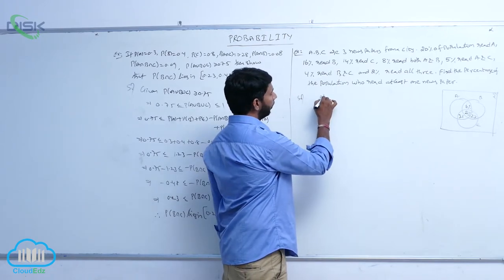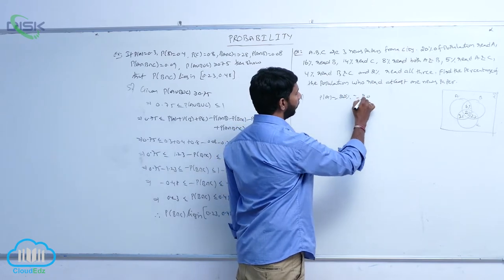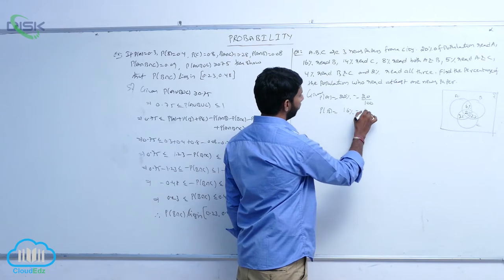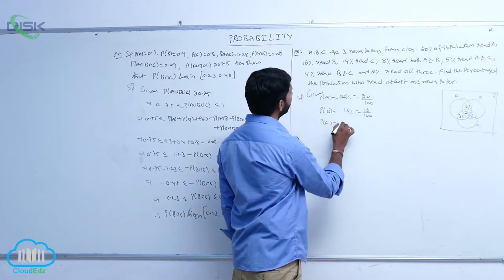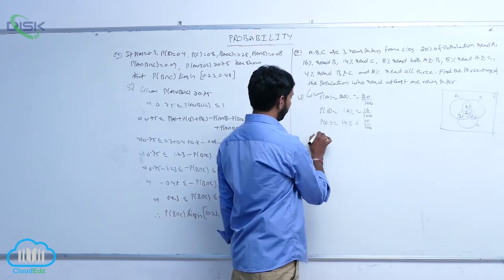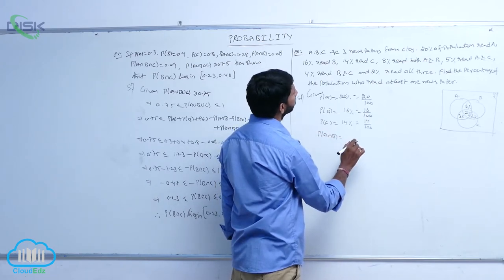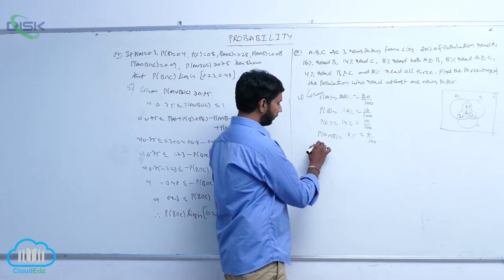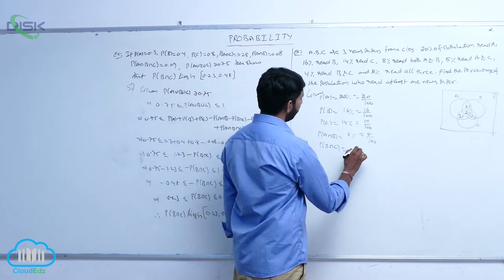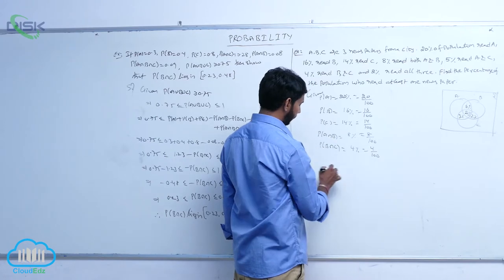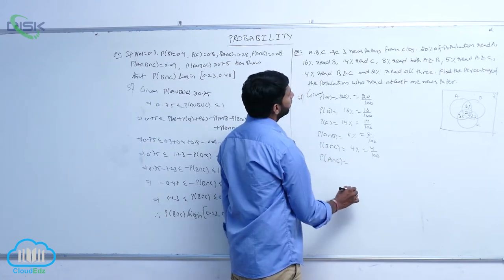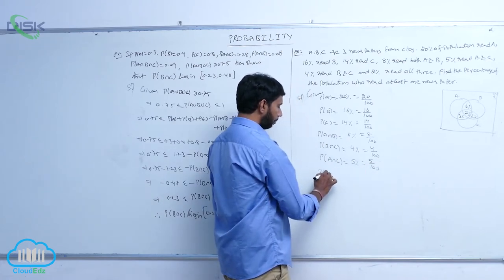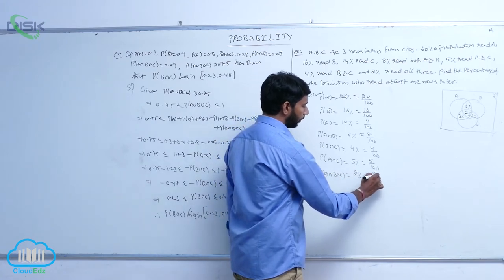P(A) = 20% = 20/100. P(B) = 16% = 16/100. P(C) = 14% = 14/100. P(A∩B) = 8% = 8/100. P(B∩C) = 4% = 4/100. P(A∩C) = 5% = 5/100. P(A∩B∩C) = 2% = 2/100.